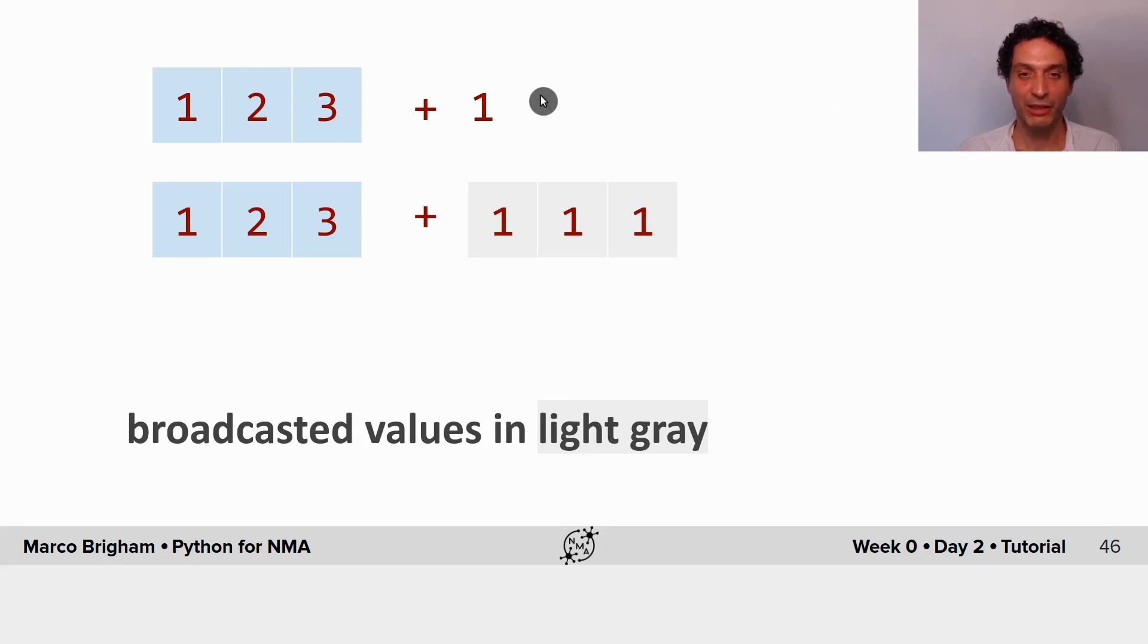So my integer, when I add it to the NumPy array, it generates or it considers it to be one NumPy array of the same dimension with three elements and value one. So when I add it, it is as if I'm adding one element to each element of my NumPy array.